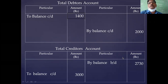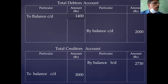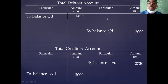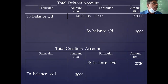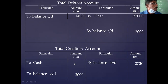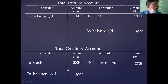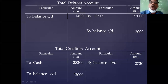From first to last, check transactions related to debtors. In the receipt side, collection from debtors is there — cash collection from debtors goes to the debtors account credit side: by cash 22,000. On the payment side, cash paid to creditors goes to the creditors account debit side: by cash 28,200. There are no other items related to the debtors account.